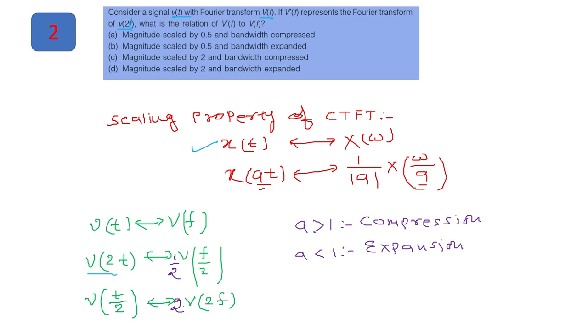So V of twice of T will be the Fourier transform of 1 by A, because the value of A here is 2 and we will say that it is scaling factor. So the answer would be A value is 2. So 1 by 2, V of F by 2. Now here we have one thing, when scaling factor is greater than 1, we will say that the signal is compressed. When A is less than 1, we will say that the signal is expanding. And from this property, you can see that if there is an expansion in time domain, there will be compression in frequency domain.